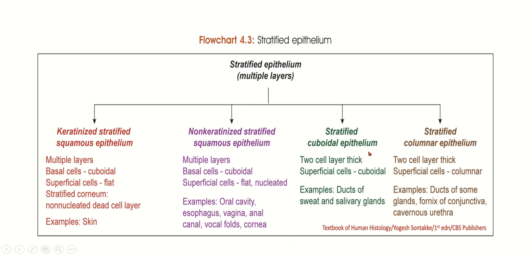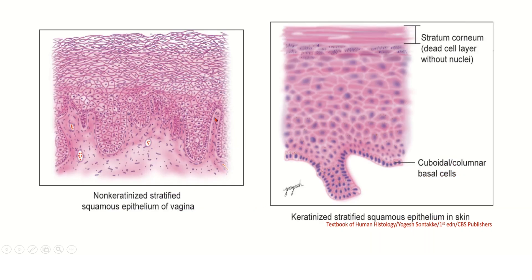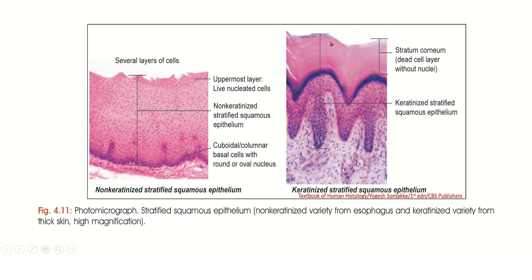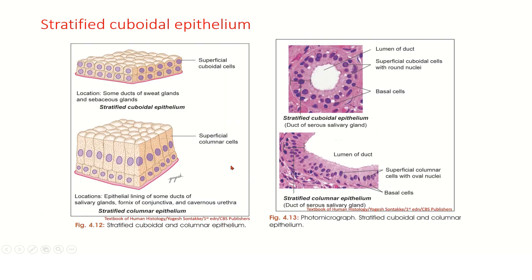Stratified cuboidal epithelium is two cell layers thick; superficial cells are cuboidal. It is seen in the ducts of sweat and salivary glands. Stratified columnar epithelium is also two cell layers thick, with superficial cells being columnar. Examples: ducts of some glands, fornix of conjunctiva, and cavernous urethra. You can see here the non-keratinized and keratinized stratified squamous epithelium, as well as stratified cuboidal and stratified columnar epithelium — in cuboidal the superficial cells are cuboidal, in columnar they are columnar.